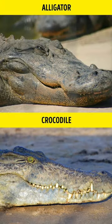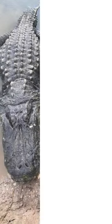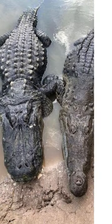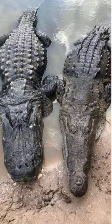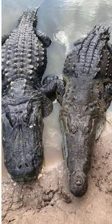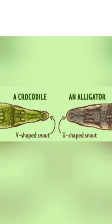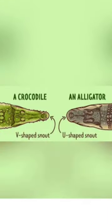Do you know the difference between alligator and crocodile? The biggest difference is the shape of their long nose. The alligator's nose is wide in a U shape, and the crocodile's is in a V shape.